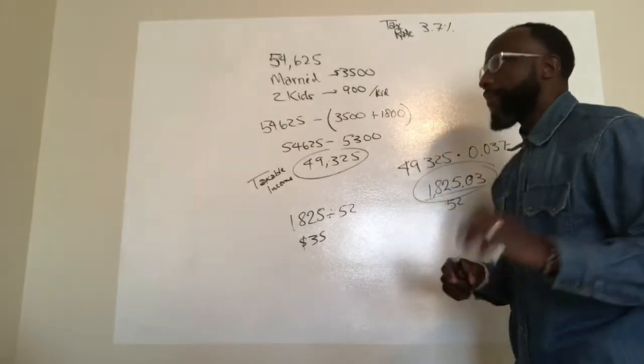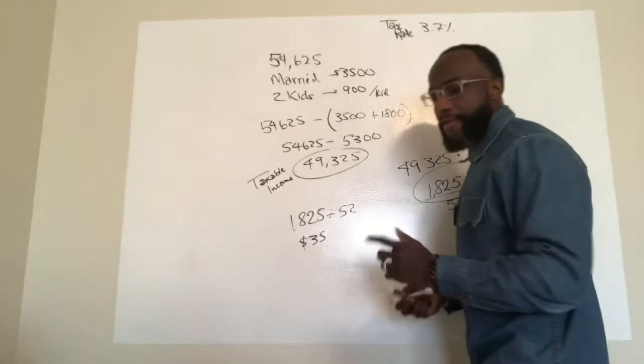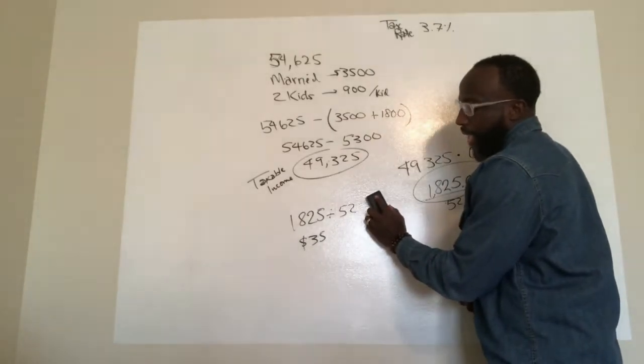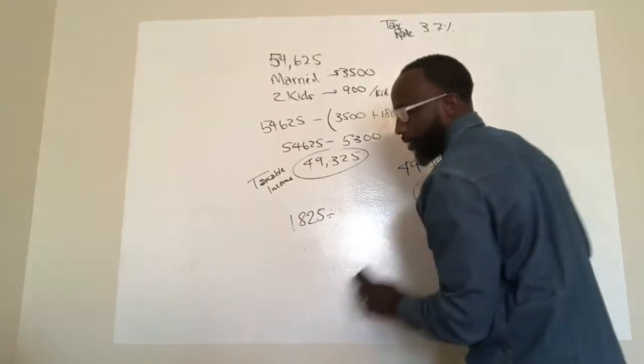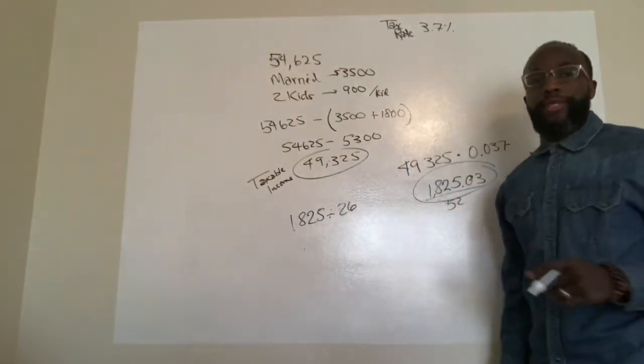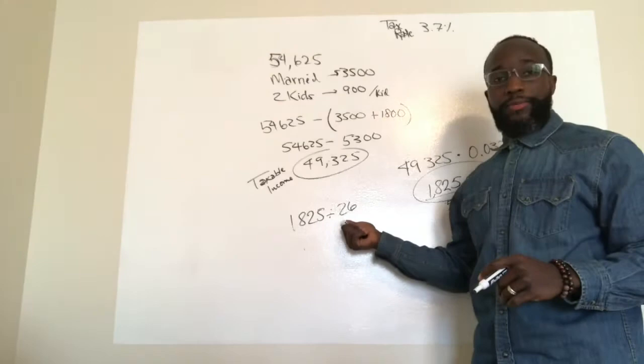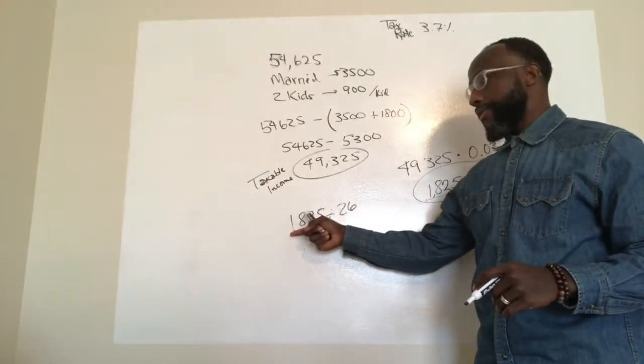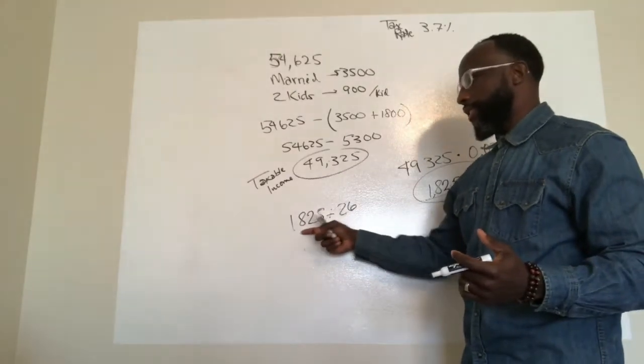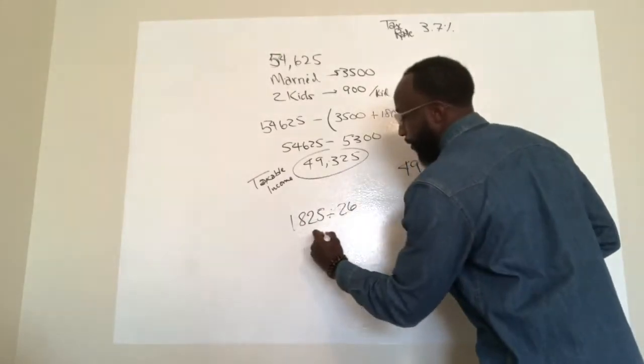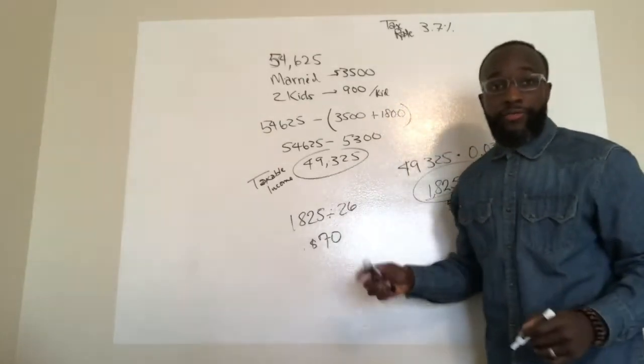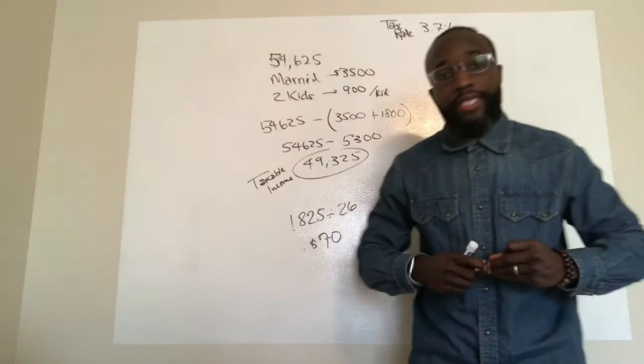Now if you got paid bi-weekly or bi-monthly, you got paid every other week, it wouldn't be 52, it'd be half of that, so which is 26. So you'd get, there's 26 payments. 26 payments where you're going to break this amount down. So 1825 divided by 26 give you around $70. And so that means that they're going to take $70 from your check. State taxes would be $70 from your check. And so that's pretty much it.